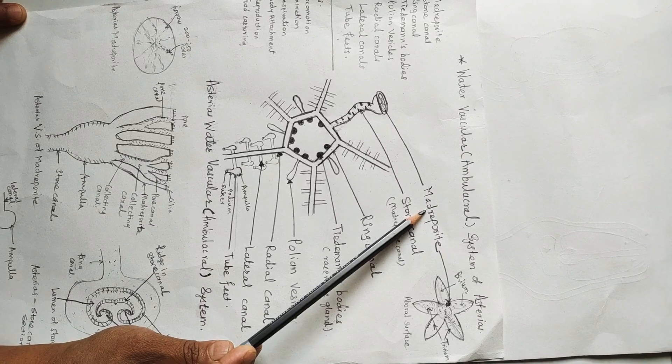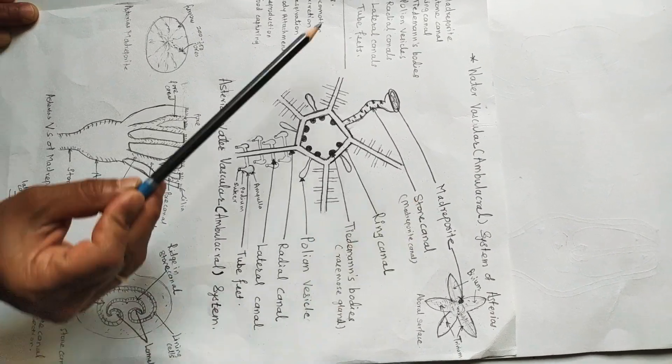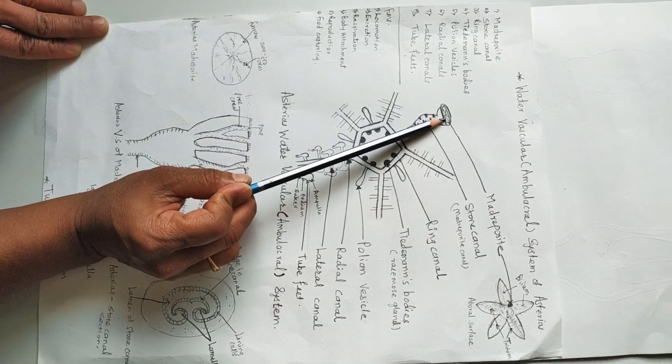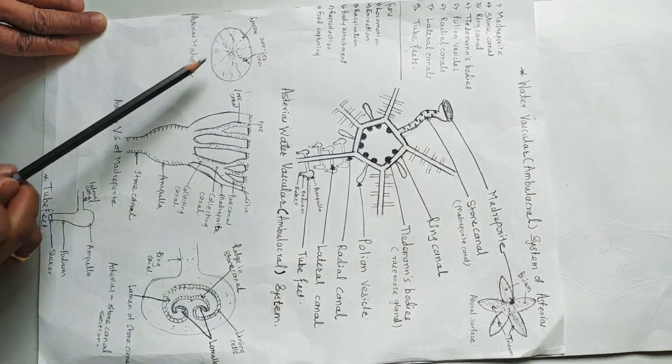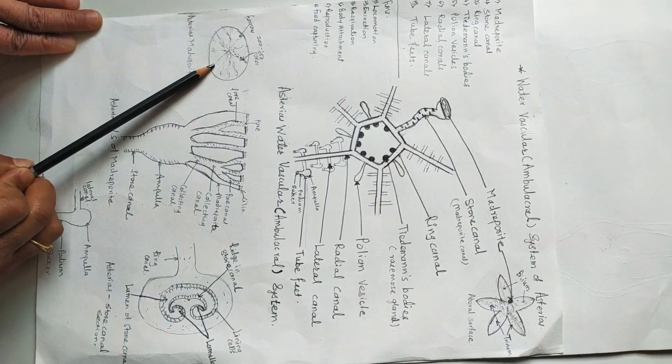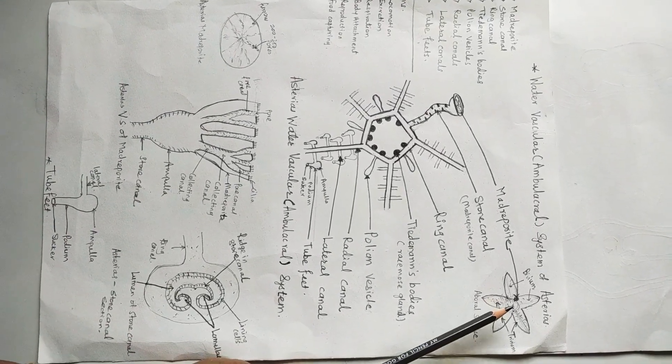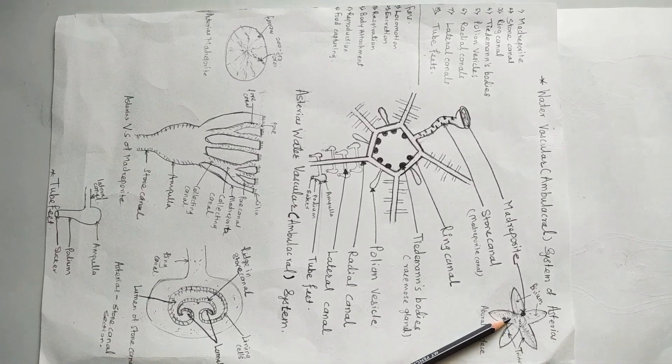First one, that is the madreporite. The water vascular system starts with the madreporite which is a hard, rounded, calcareous plate-like structure on the aboral surface. Body of the sea star or Asterias is disc-like, pentamerous or radially symmetrical.